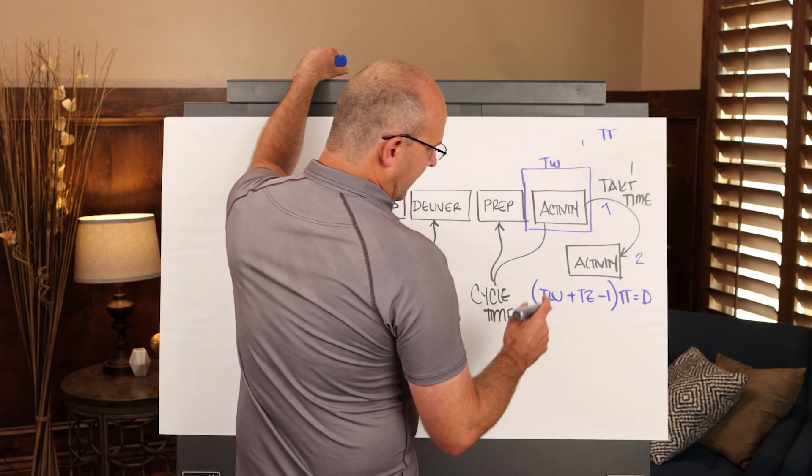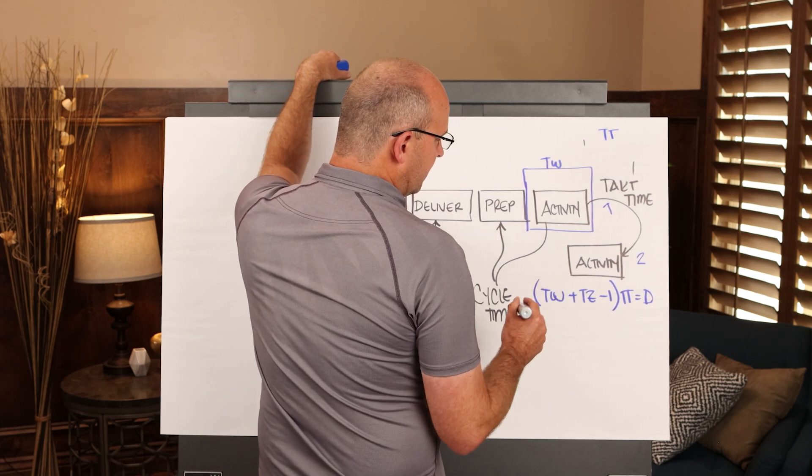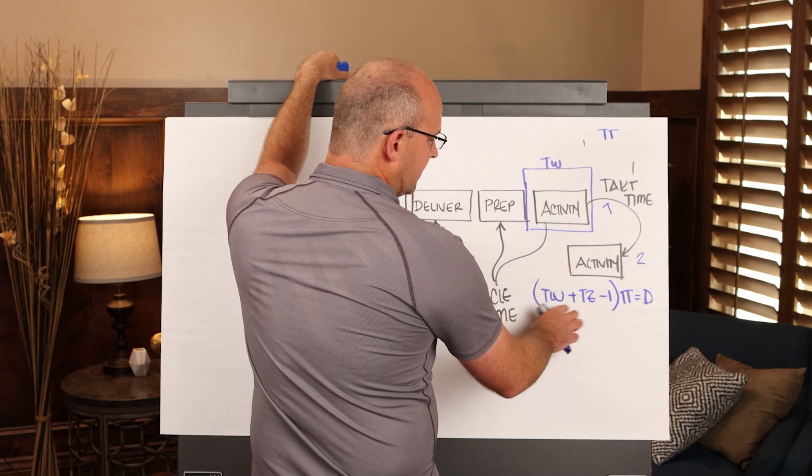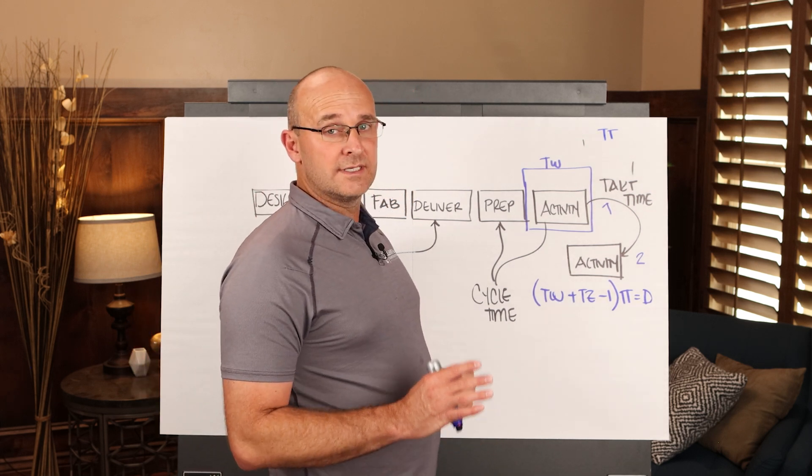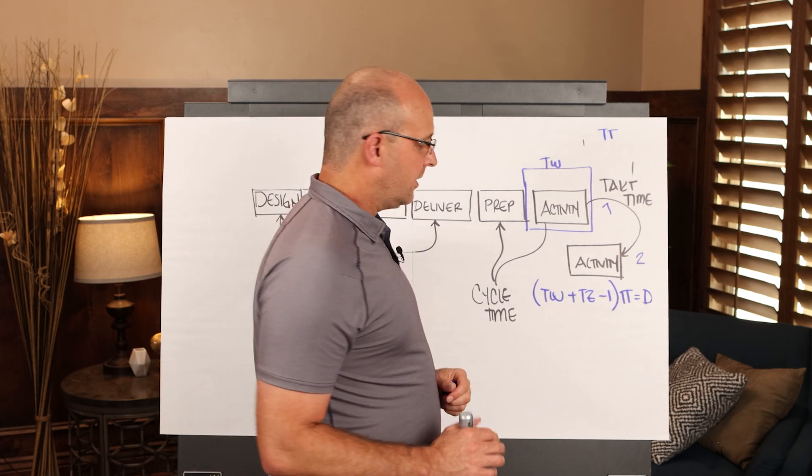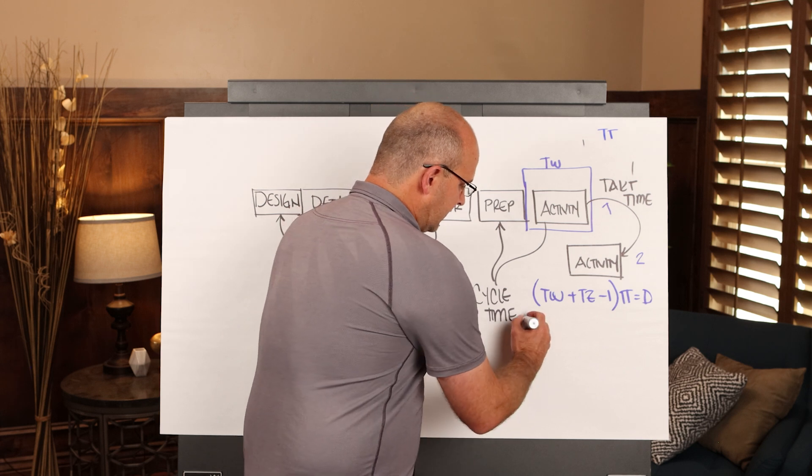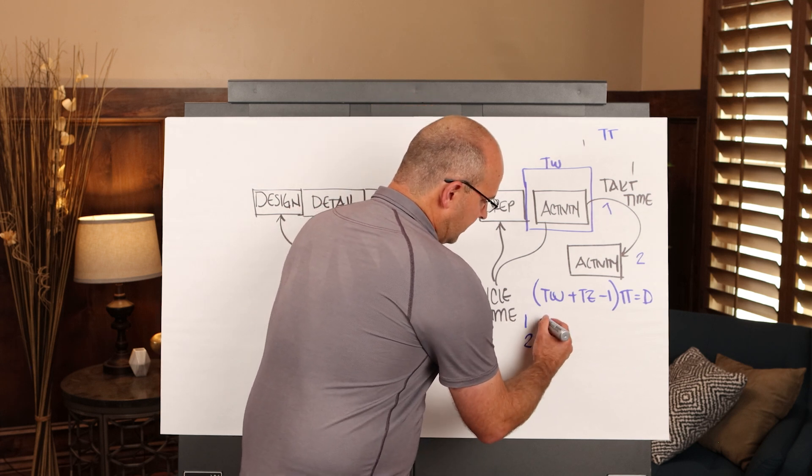That formula allows us to do a couple of neat things. It allows us to adjust these inputs so that we can get a better overall customer lead time or overall total project duration. So let's say that I had two zones here, right?